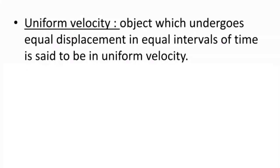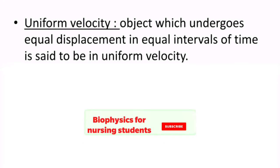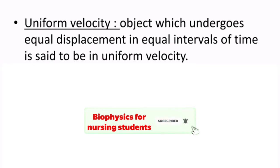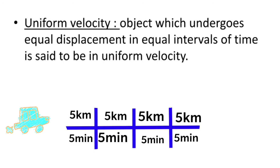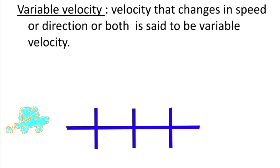Starting with uniform velocity, it can be defined as when an object undergoes equal displacement in equal intervals of time, it is said to be moving with uniform velocity. For example, in this picture you can see there is a car. It moves to point A, point B, and point C. The distance between each point is 5 kilometers, and the time taken to travel each segment is 5 minutes. So every 5 minutes it travels 5 kilometers — this is the meaning of uniform velocity.